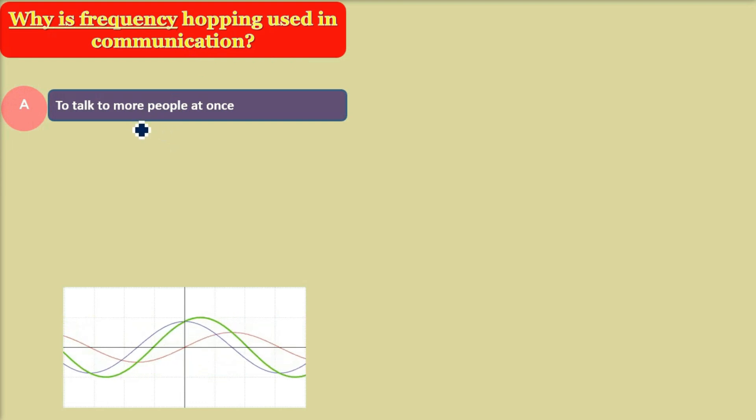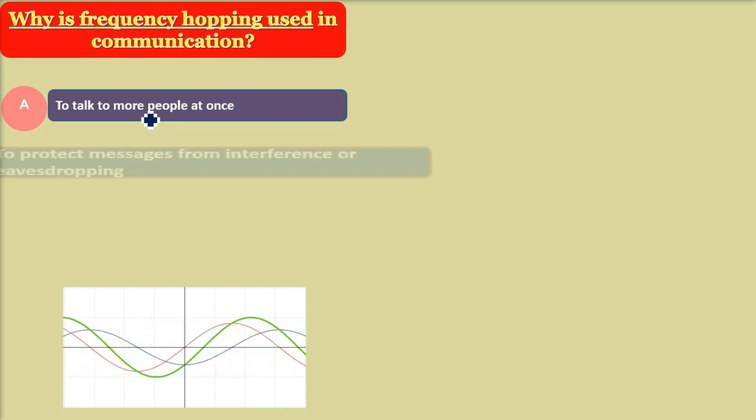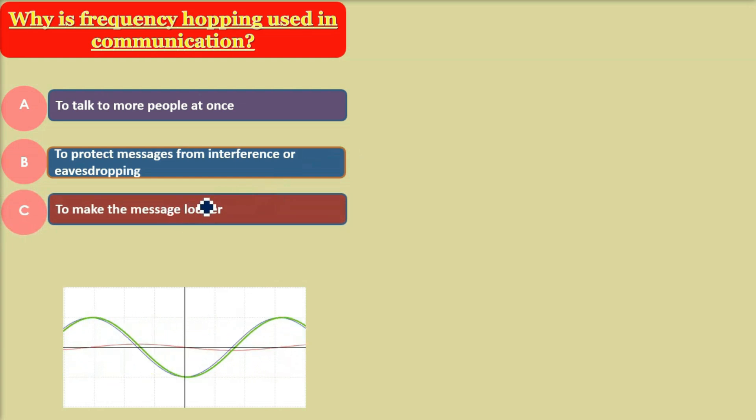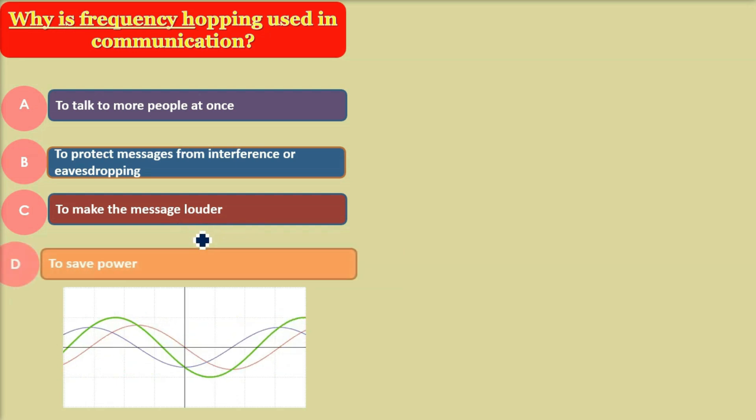Why is frequency hopping used in communication? The options are: to talk to more people at once, to protect messages from interference or eavesdropping, to make the message louder, or to save power. What do you think is the correct answer?